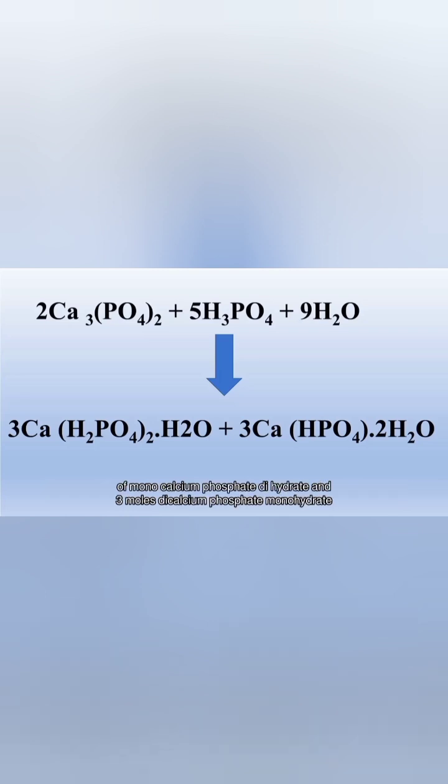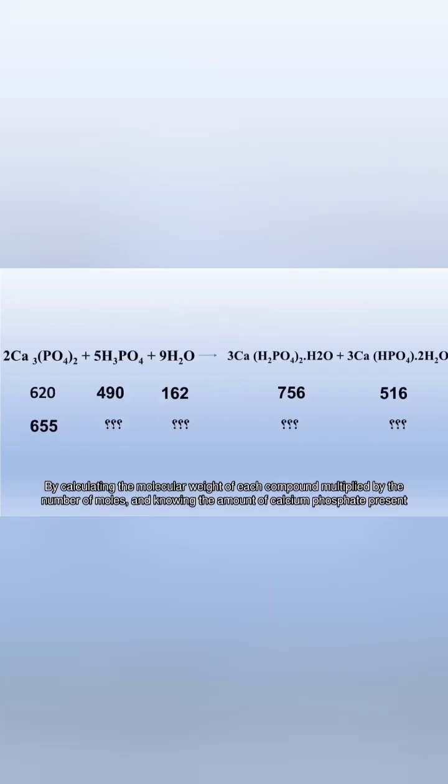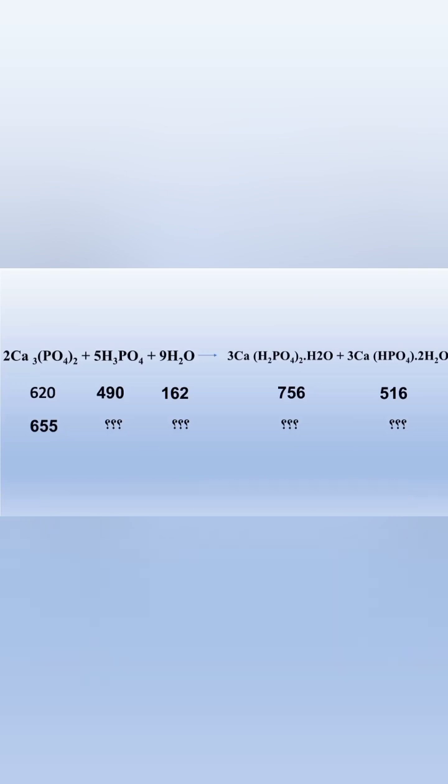This yields three moles of monocalcium phosphate dihydrate and three moles of dicalcium phosphate monohydrate. By calculating the molecular weight of each compound multiplied by the number of moles and knowing the amount of calcium phosphate present, we can determine the quantities.